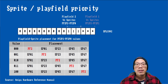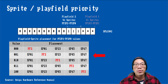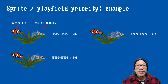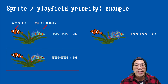With respect to playfield graphics, we are a little bit more flexible. The BPLCON2 register contains two sets of three bits each to determine the placement of playfields with respect to the sprites. Since we are not using dual playfield mode, only playfield 2 matters to us. This table shows where the background graphics will be drawn depending on the bit combination. In the first case, the bits are all set to zero, so the playfield graphics is drawn in front of all the sprites.